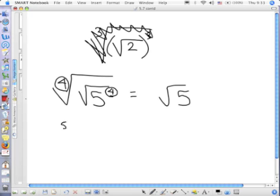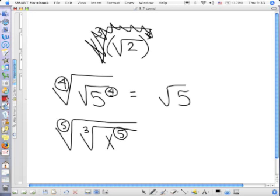If I had the 5th root of the cubed root of x to the 5th power, this is the same as this. What do you think I'm going to get? The cubed root of x.